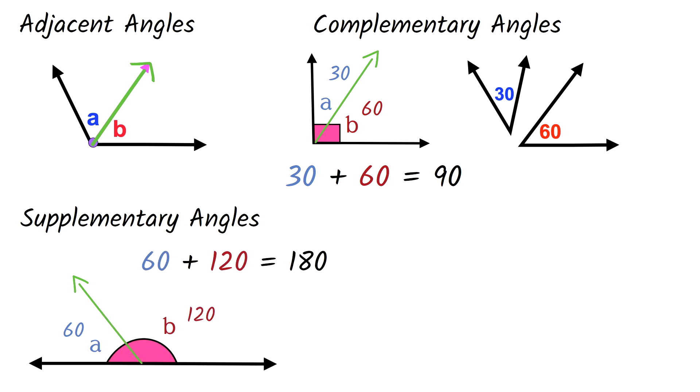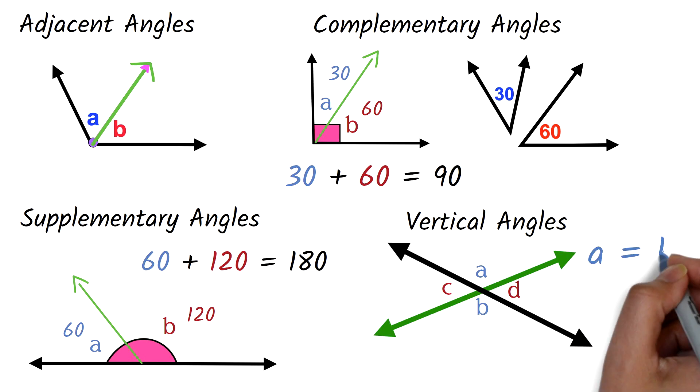Again, we used an example where the two angles are adjacent. They don't always have to be adjacent to be supplementary. Vertical angles are angles opposite each other when two lines cross each other. Vertical angles are equal. This is also a very important statement. So here, angle A and angle B are equal. Angle C and angle D are also equal.